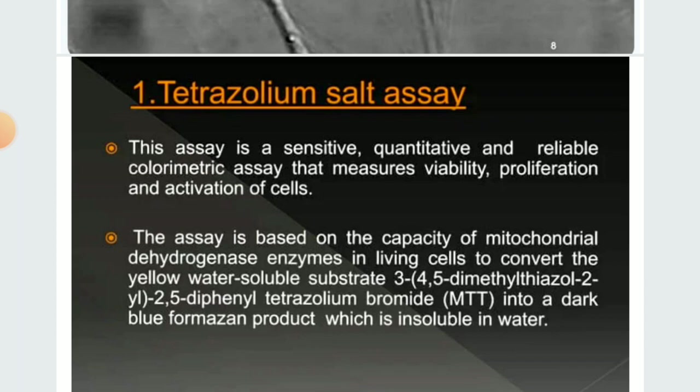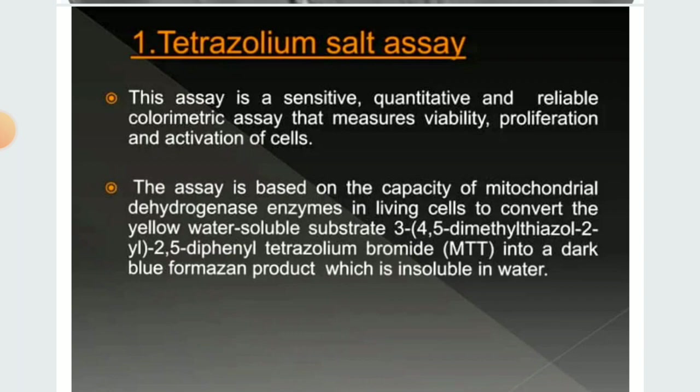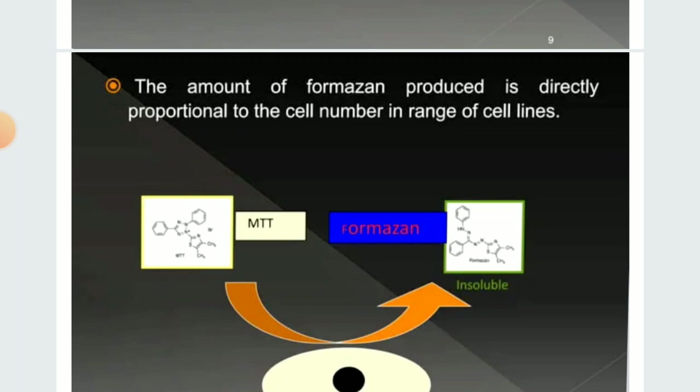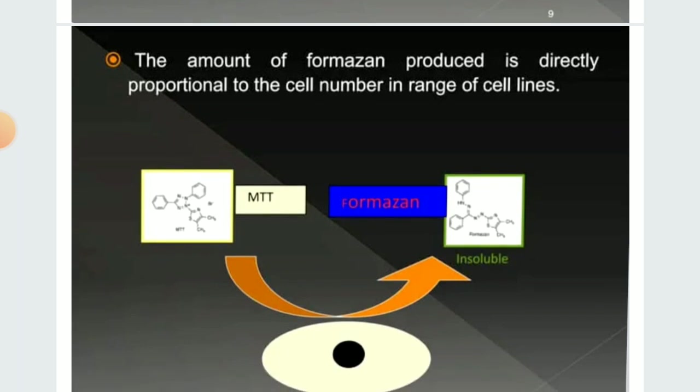The first in vitro method is the tetrazolium salt assay. This is a very sensitive, quantitative, and reliable colorimetric assay that measures the viability, proliferation, and activation of cells. This assay is based on the capacity of mitochondrial dehydrogenase enzyme to reduce the tetrazolium salt. The amount of formazan produced is directly proportional to the cell number across a range of cell lines.